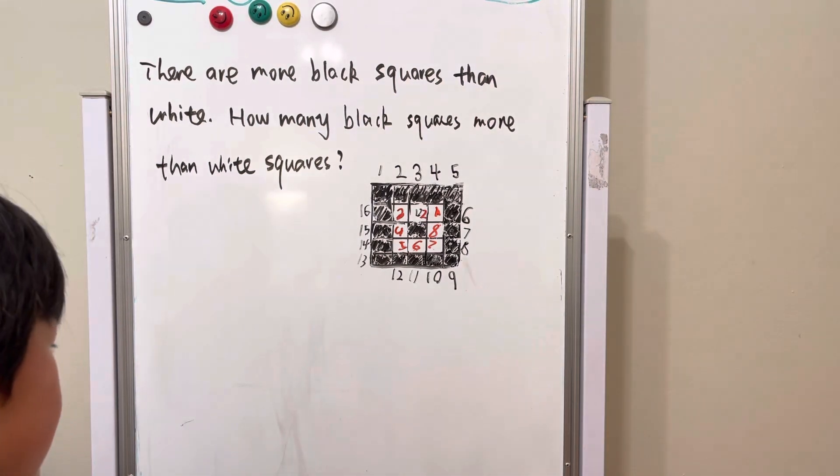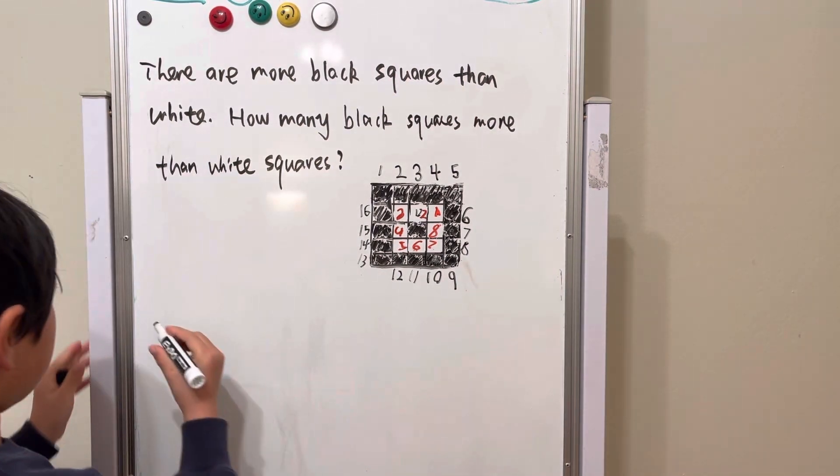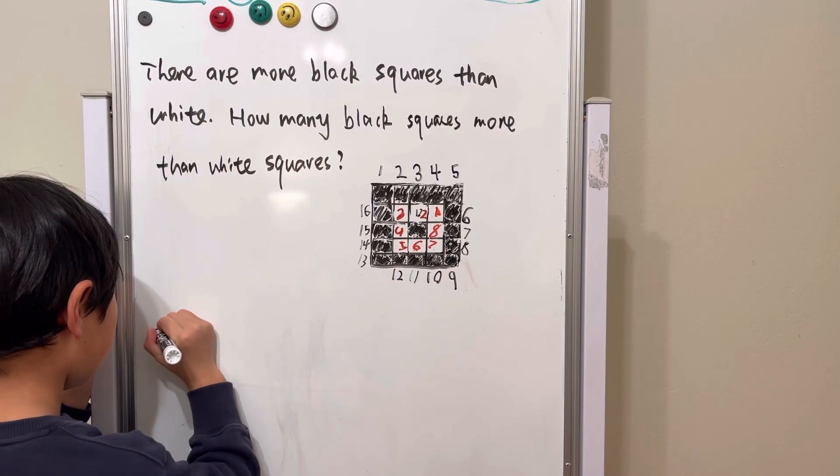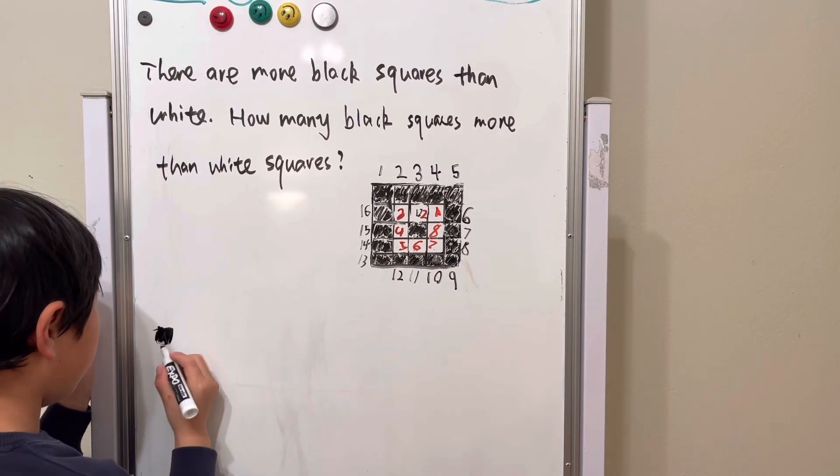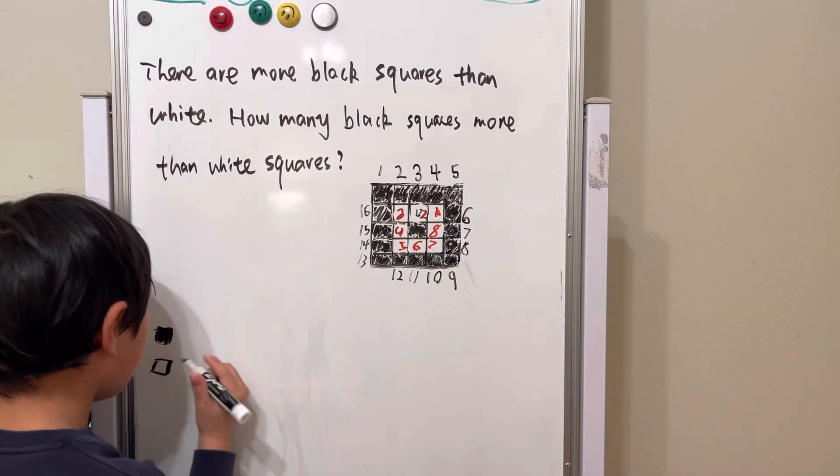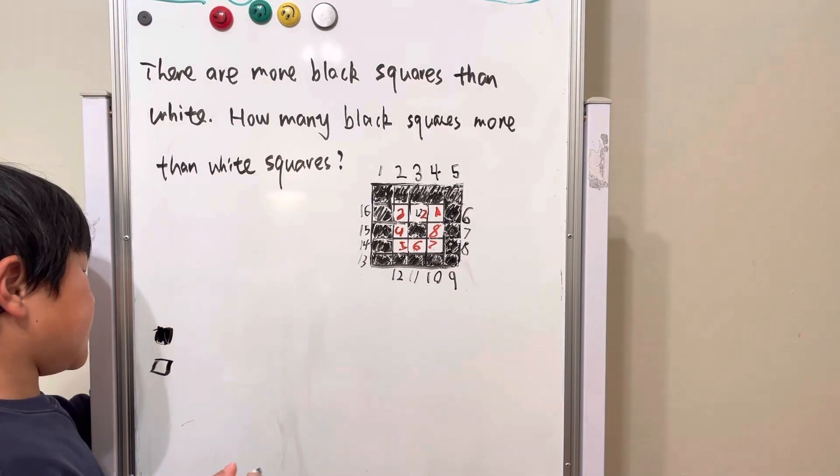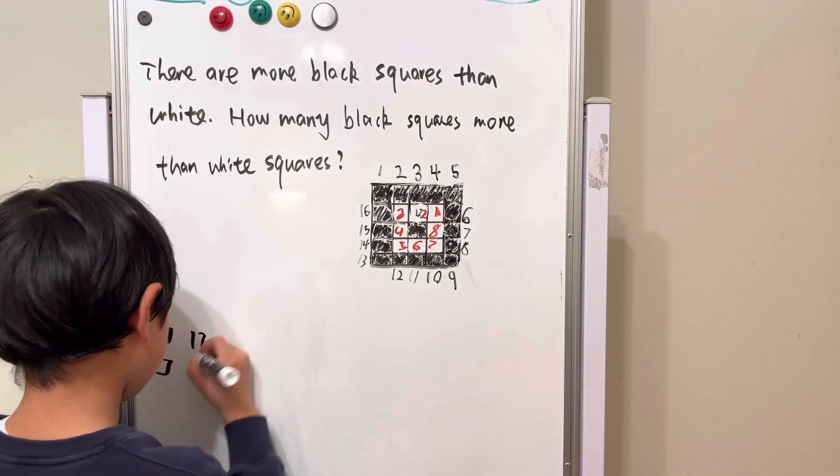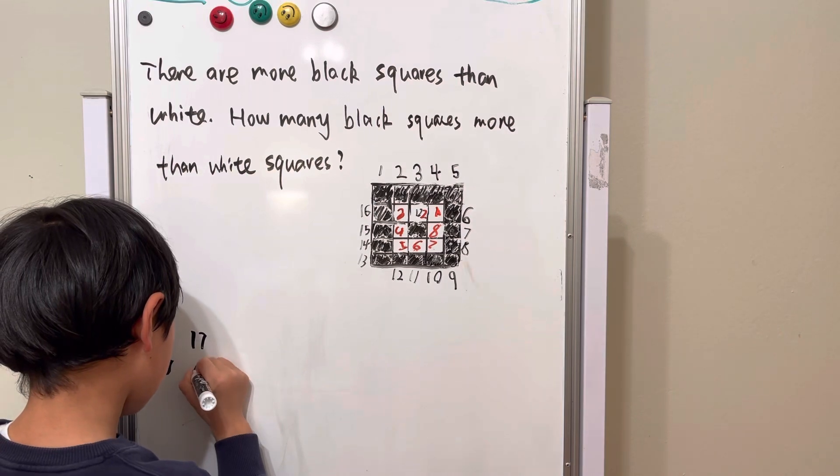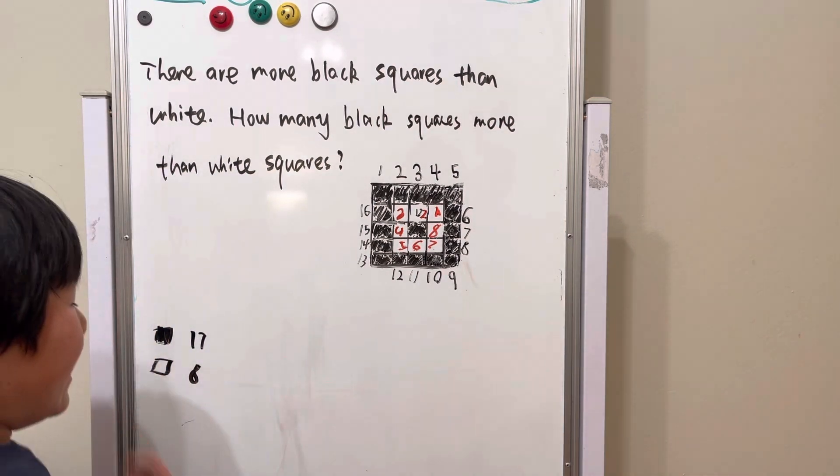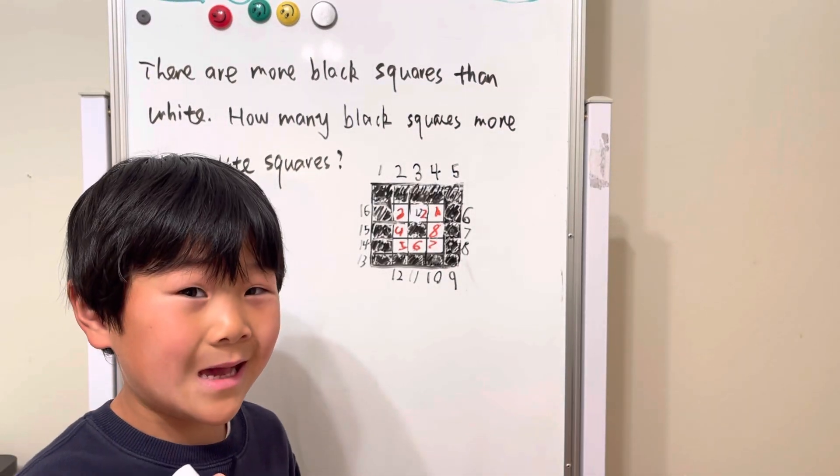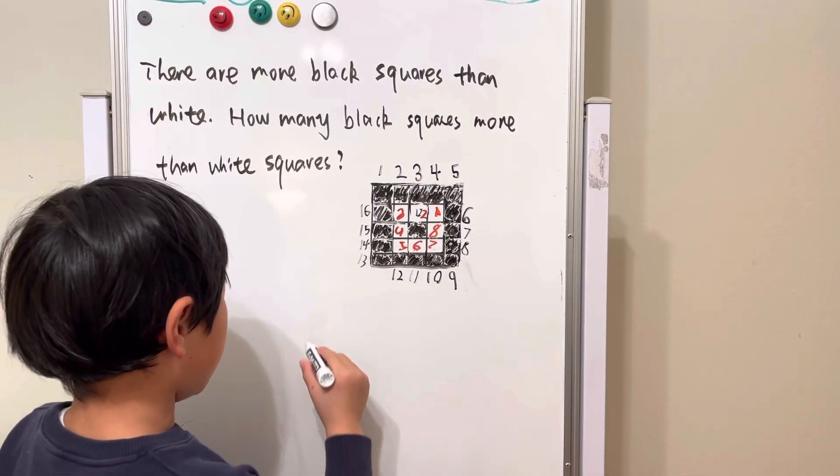So, we're going to do this. This is the black squares and this is the white squares. So, let's write the numbers. And, let's go into a math problem right now.